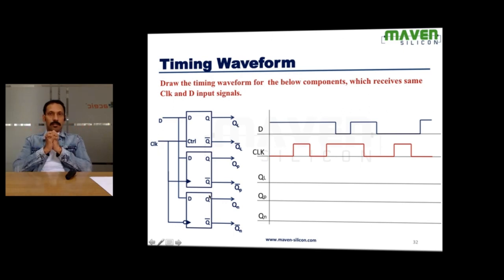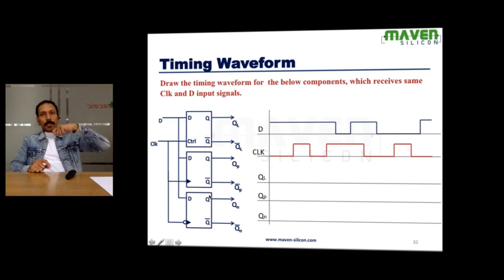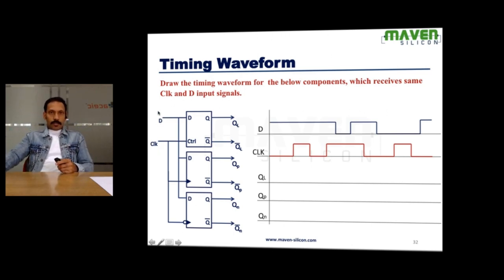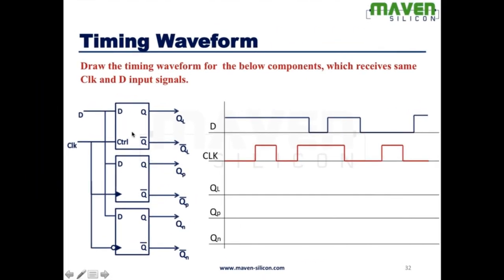What is flip-flop? What is latch? Now look at this waveform — you can easily understand. We call this latch a transparent device. So here, this is the input D and this is a D latch. This symbol indicates it's a flip-flop, so we consider this as a D flip-flop. Here it's a posedge flip-flop, and here there is a bubble, so we consider this as a negative-edge flip-flop.